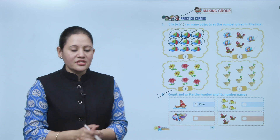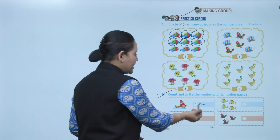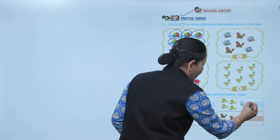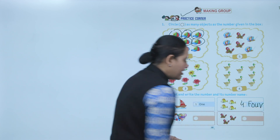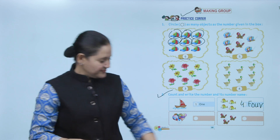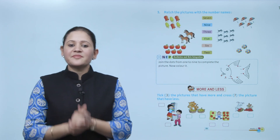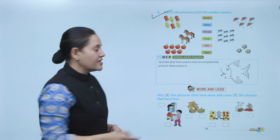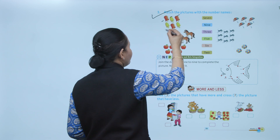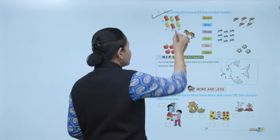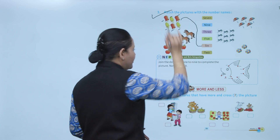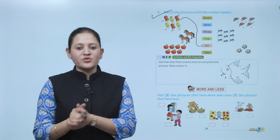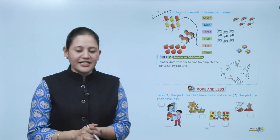First there is one yacht, so write number one and O-N-E. Four fishes — so write here number four and number name F-O-U-R. Next, match the picture with the number name. In the first picture, how many streamers? One, two, three, four, five, six — match it with six. Clear.